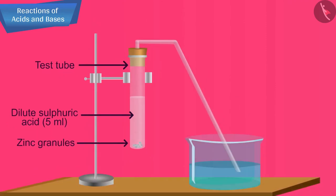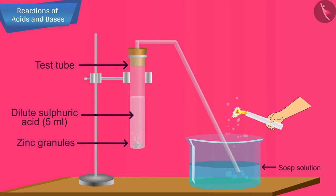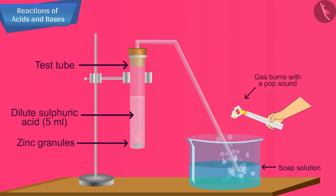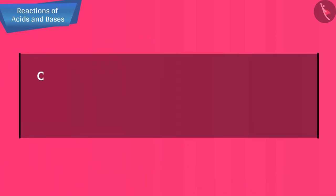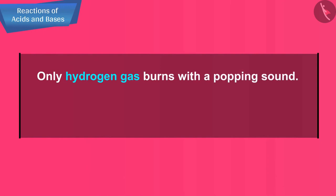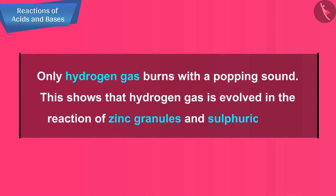Pass the gas being evolved through the soap solution taken in a trough by means of a glass tube. Why are bubbles formed in the soap solution? Take a burning candle near a gas filled bubble. What do you observe? The gas present in the soap bubble burns with a pop sound making a little explosion. Only hydrogen gas burns with a popping sound. This shows that hydrogen gas is evolved in the reaction of zinc granules and sulphuric acid.